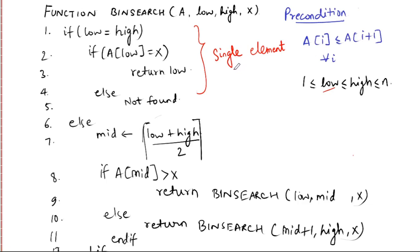Lines 1 to 5 handle the single element case. Now what if the number of elements is more than 1? For that, the following piece of code will be executed, where we calculate mid using (low + high) / 2. Alternatively, you can use (high - low + 1) / 2, where the plus 1 is added in case you are using zero-based indexing, making the range 0 to n minus 1.